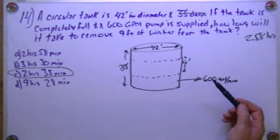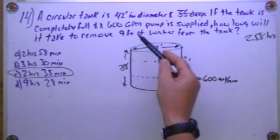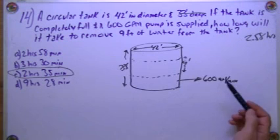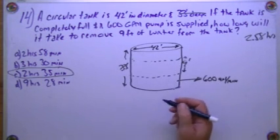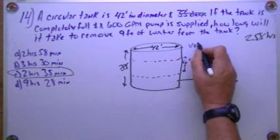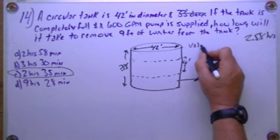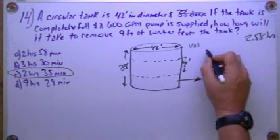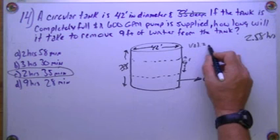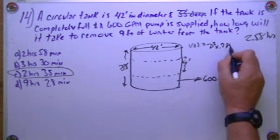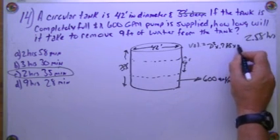600 gallons per minute. We could turn that into cubic feet per minute, or we can turn the tank into gallons. Either way, I'll just turn the tank into gallons. So we're going to need the volume of the tank, of a round tank, which is going to be basically the area formula plus the depth.